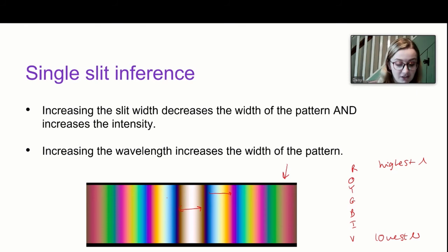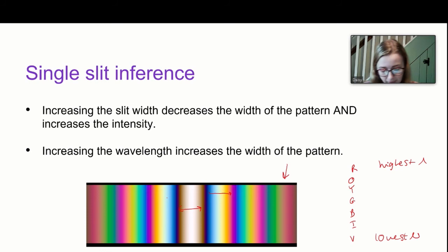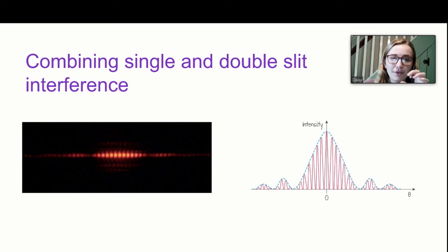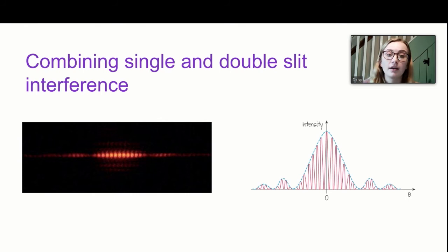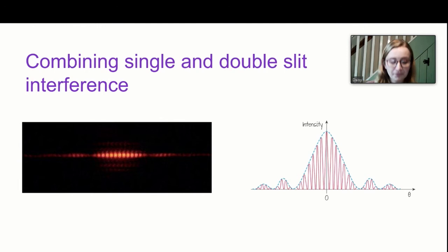Double slits are composed of two slits, so as well as getting interference between those two slits, there's also interference of light within each slit. This means that when we look at a double slit pattern, we don't just get the same intensity all the way along. The rapid oscillation of the red maxima is caused by double slit interference, but this is all contained within a blue envelope caused by single slit interference — so both effects must be considered together.